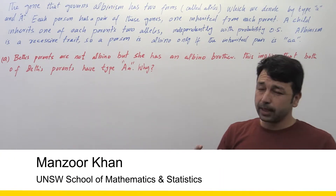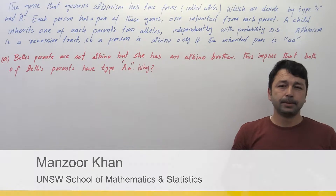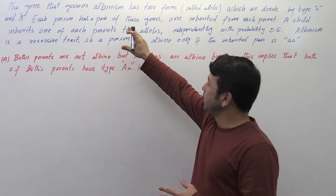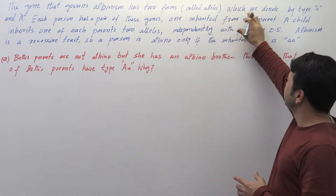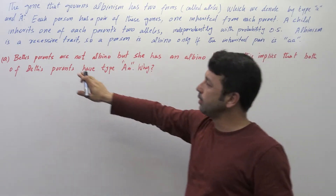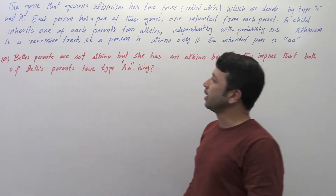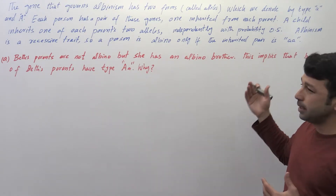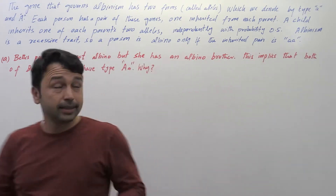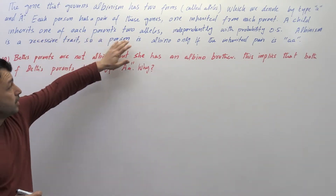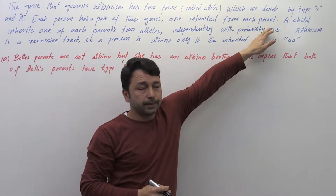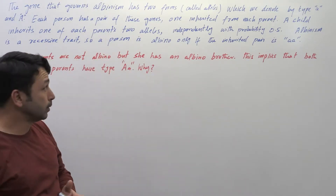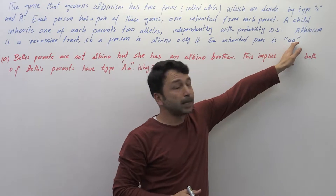Let me explain the question first. People with albinism have little pigment in their skin, eyes, and hair. The gene that governs albinism has two forms called alleles, denoted by small 'a' and capital 'A'. Each person has a pair of these alleles, one inherited from each parent. A child inherits one of each parent's alleles independently with probability 0.5. Albinism is a recessive trait, so a person is albino only if the inherited pair is type 'aa' (small a, small a).